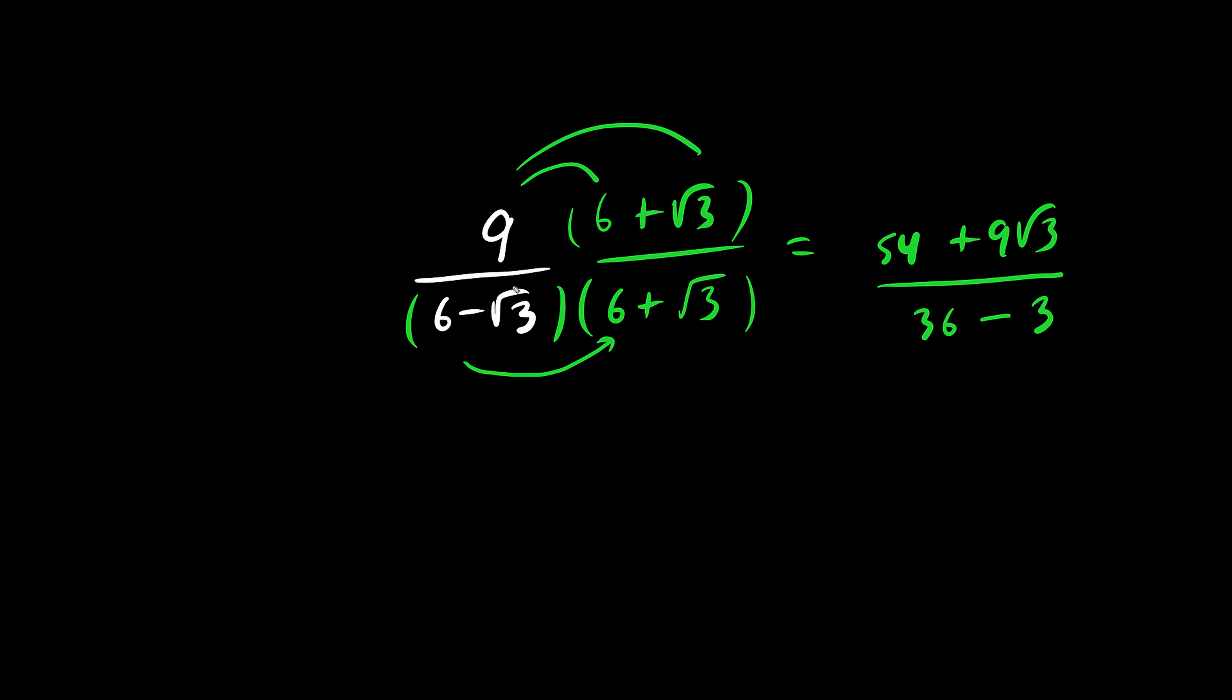The square root of a number times itself is the inside number. Thirty-six minus 3 is 33.